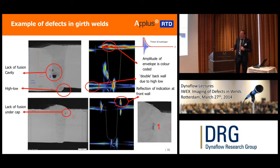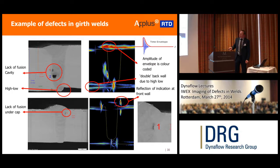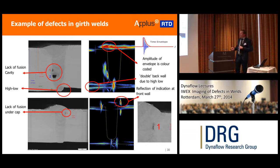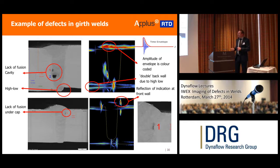This is a nice example of a lack of fusion defect right under the cap. The difficult part of this type of defect is that you would like to know the distance from the surface to the defect itself, because that is needed for the calculations. You can see the reflection of the defect through the front wall because it acts as a mirror — the defect is seen from multiple angles. Still, you can see that the defect is very nicely revealed.